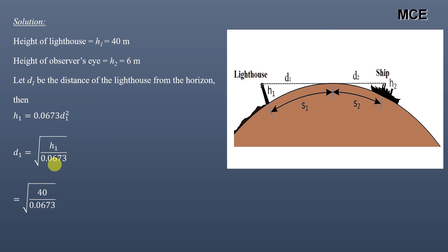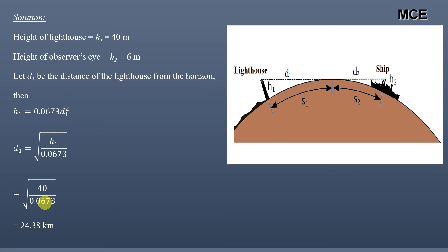Putting the value of h1, d1 = √(40 / 0.0673) = 24.38 kilometers. This is the distance of the lighthouse from the horizon.